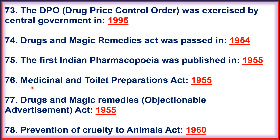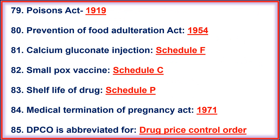76. Medicinal and Toilet Preparation Act, 1955. 77. Drug and Magic Remedies Objectionable Advertisement Act, 1955. 78. Prevention of Cruelty to Animal Act, 1960. 79. Poison Act, 1919. 80. Prevention of Food Adulteration Act, 1954.